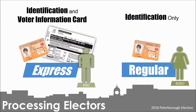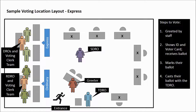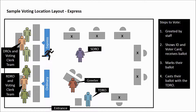Electors who bring their voter information cards and identification will go to what we call the express lane to receive their ballot. The elector arrives at the voting location and is greeted by the greeter, then proceeds to the express voting lane. The DRO scans the voter information card and gives them a ballot. The elector goes behind the screen, marks their ballot, and gives it to the Tabulator Deputy Returning Officer before leaving the voting location.